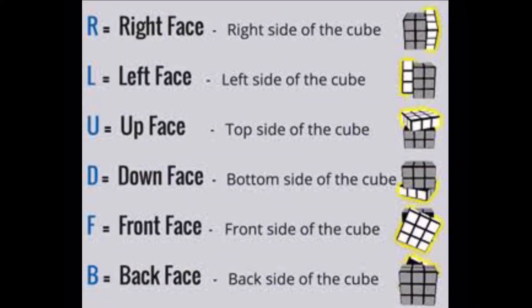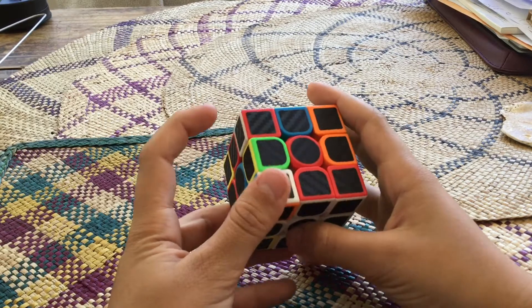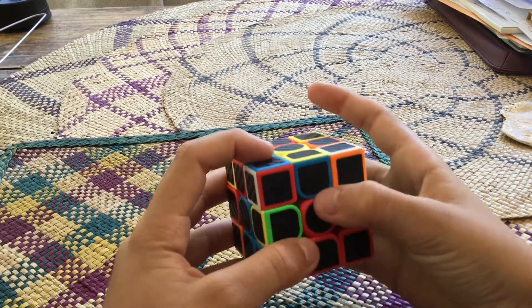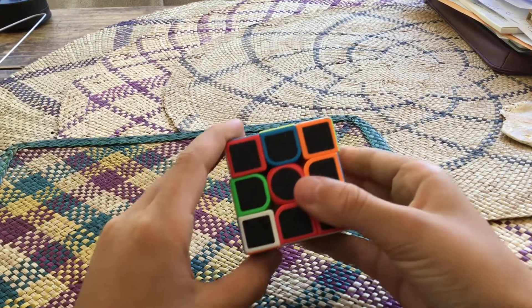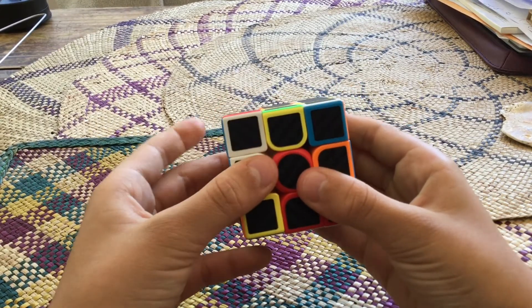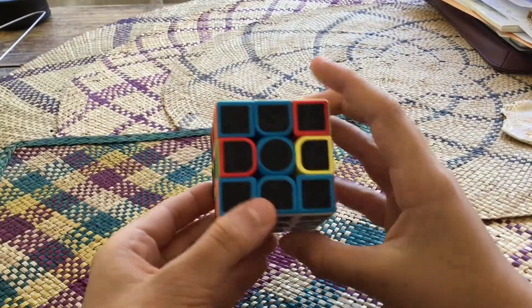Now most of you guys probably think I've gone insane, I've lost my mind, but look at this chart and it will make sense. Now second case is it's on the left side, which means you have to do the exact same thing, except just on the left. So basically do the algorithm: R apostrophe U apostrophe R U.